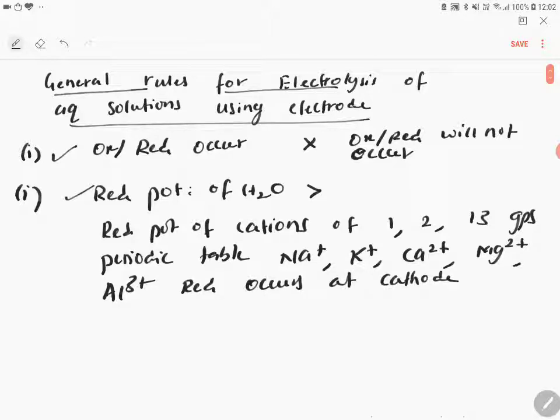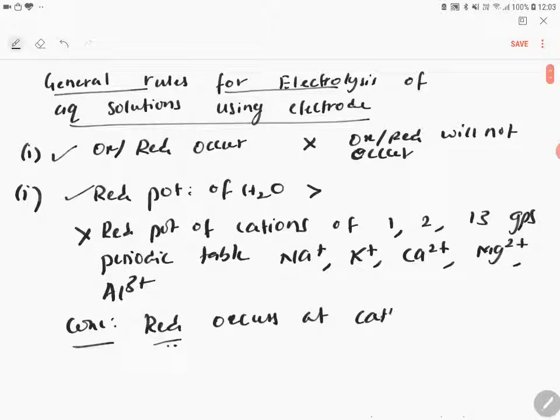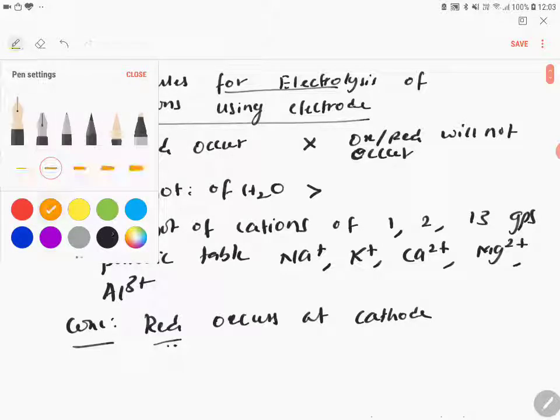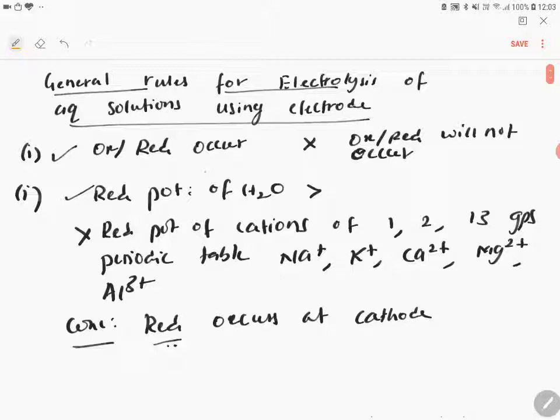Reduction occurs at cathode means what? When reduction occurs at cathode, so I will write this in the next line. Therefore, conclusion of this is: reduction occurs at cathode, which means water is reduced. So this is your cathode means all these metals are at anode. So this is the first important rule.